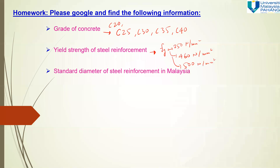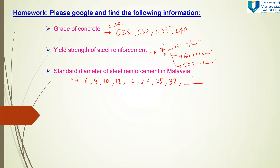What is the standard diameter of steel reinforcement in Malaysia? The typical diameters are 6, 8, 10, 12, 16, 20, 25, and 32 mm — and the unit is in millimeters. These are the typical diameters you may find in construction.